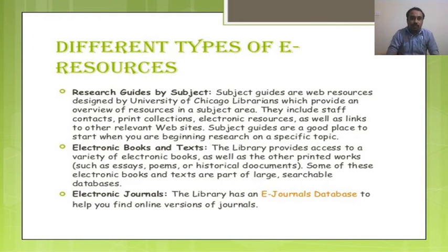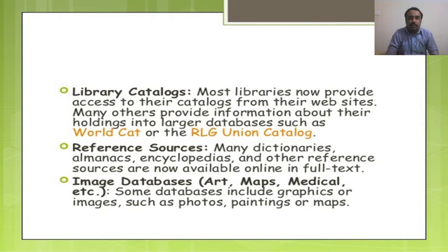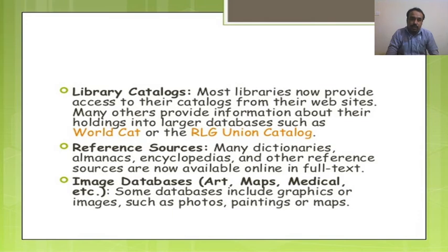Different types of e-resources include research guides by subject, electronic books and texts, and electronic journals. The library has an e-journals database to help find online versions of journals. Most libraries now provide access to their catalogs from their website. Many others provide information about their holdings in larger databases such as WorldCat or union catalogs. Some databases include graphics or images such as photos, paintings, or maps — for example, image databases for art, maps, and medical content.